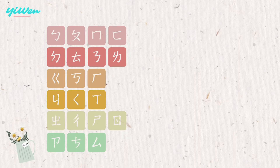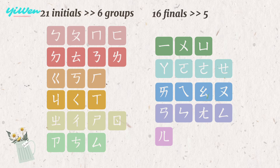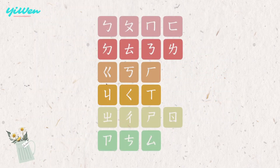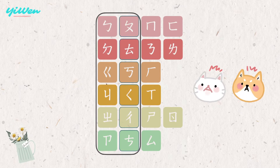Why are the symbols arranged the way they are? Actually, the arrangement is based on articulation. The symbols with the same color background are pronounced using the same type of articulation. Therefore, the 37 symbols can be put into 11 groups. Moreover, in six groups of the initials, the first and second columns form a pair — the first column is pronounced with less air, while the second puts out a strong burst of air.